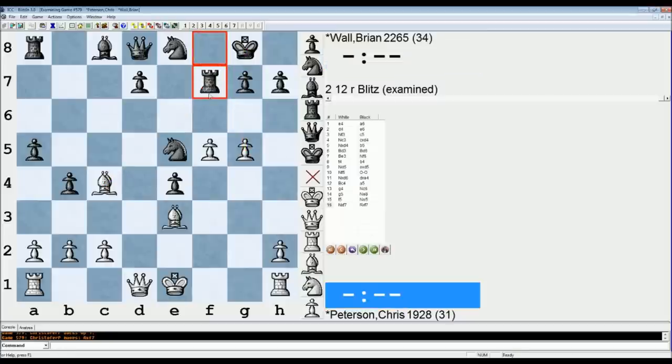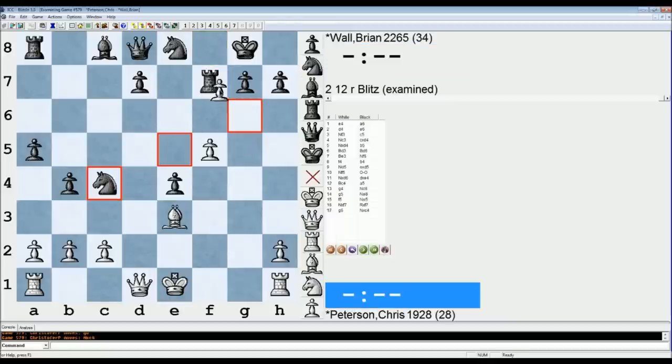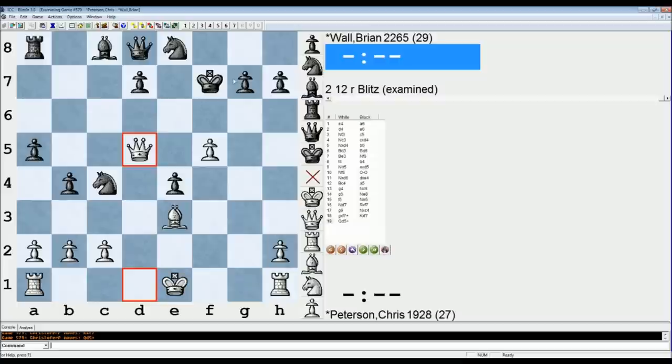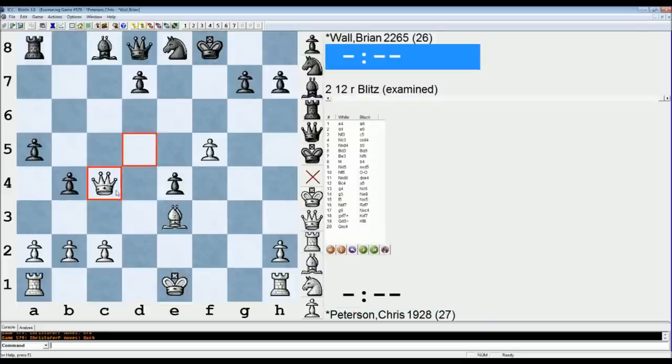If he tries rook takes f7, and I play g6, knight takes c4, g takes f7 check, king takes f7, queen d5 check, king f8, and then queen takes c4. I'm not even down any material for all this awesome play that I have. That line would have been much better for me.